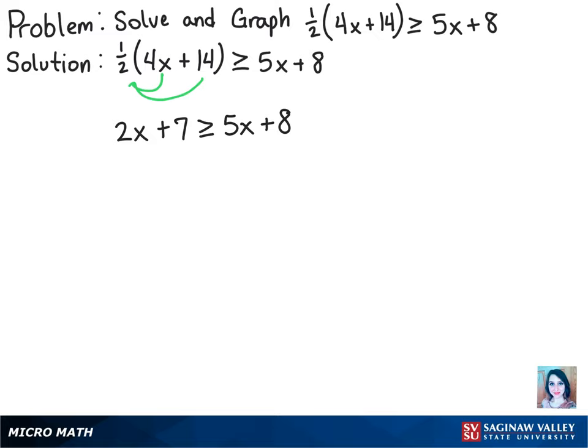Now let's subtract the 2x from both sides of the inequality so that x can be on one side. We get 7 is greater than or equal to 3x plus 8.